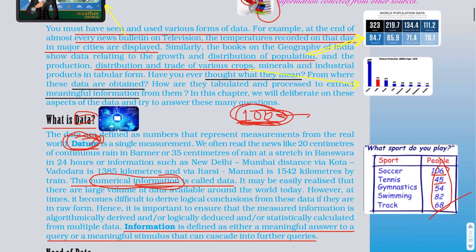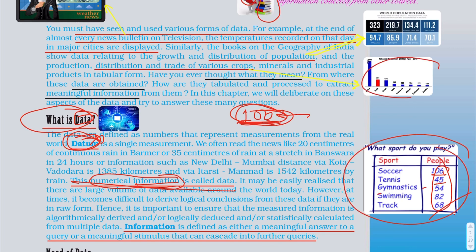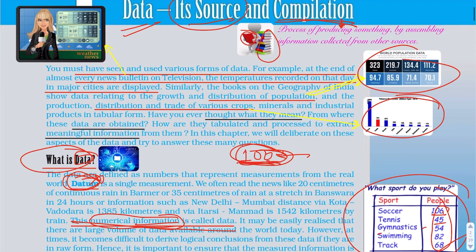Let's look at the first topic: what is data? The numerical information is called data. Whatever is numerical information — you can see all these sports and these — these are all data. Numerical data is written here; these are numerical data.